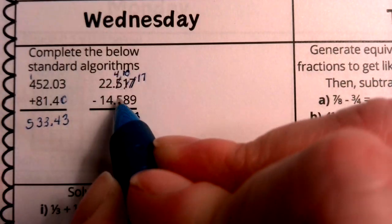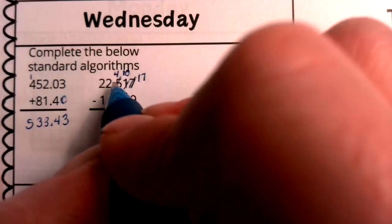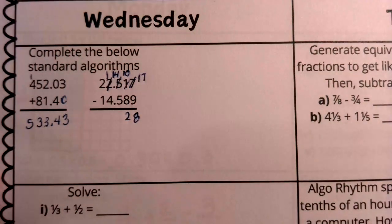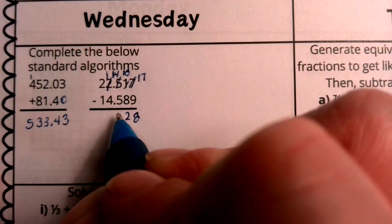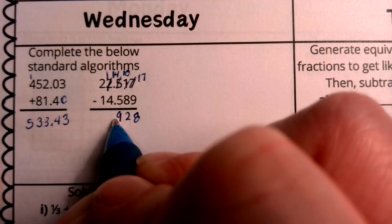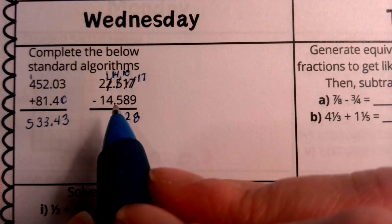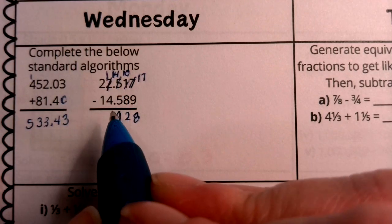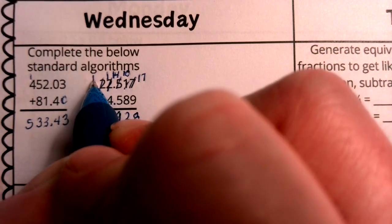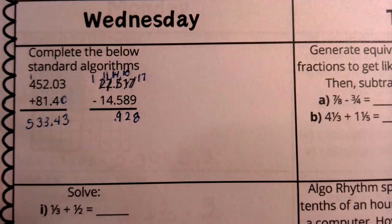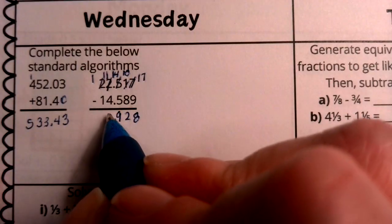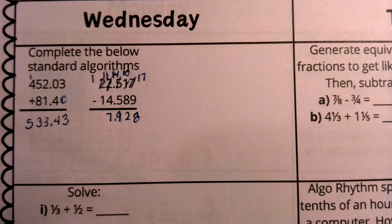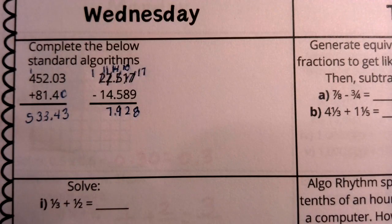Now I have 4 minus 5. I can't do that either. So I'm going to borrow from this 2. I'm going to make that a 1, and this becomes not a 4, but a 14. 14 minus 5 is 9. Here's my decimal. And I can't do this either. Every single part of this is borrowing. We have 1 minus 4, which I cannot do. So I'm going to borrow from this 2. I'm going to make it a 1. This is an 11. 11 minus 4 is 7, and 1 minus 0 is 1.